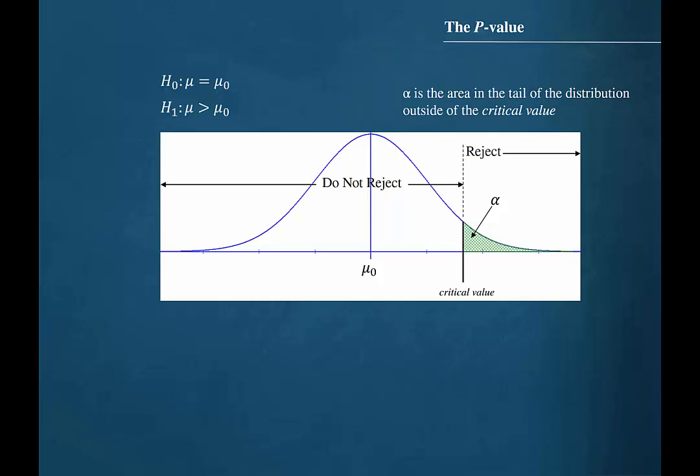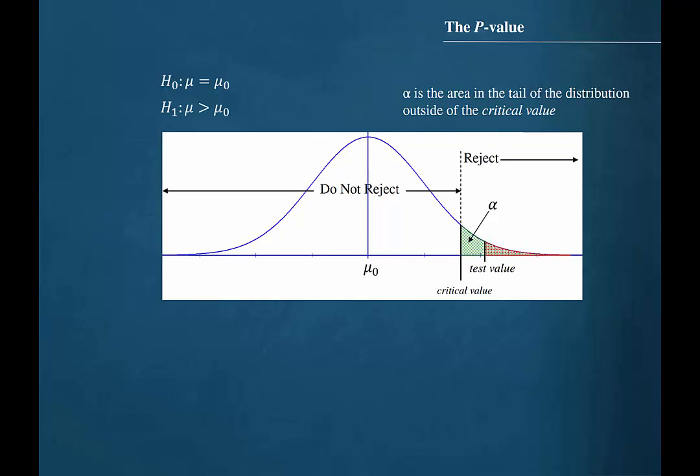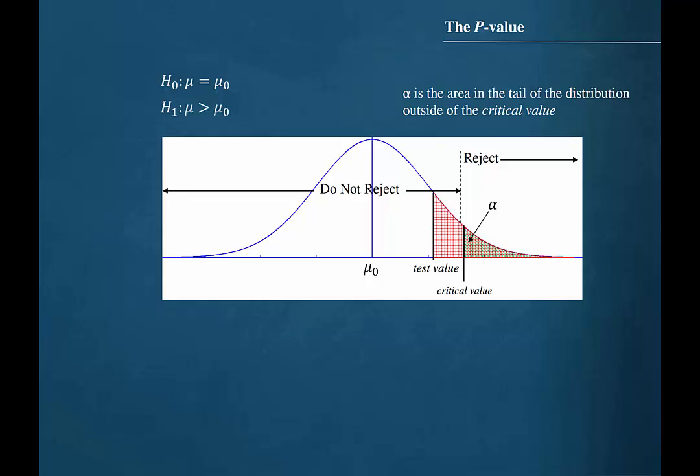When a test value is calculated in a hypothesis test, there are two possible cases: either the test value lands in the rejection region, or the test value lands in the region where we do not reject the null hypothesis.